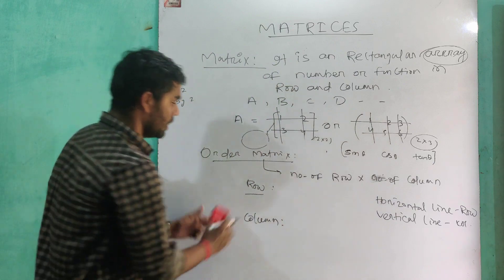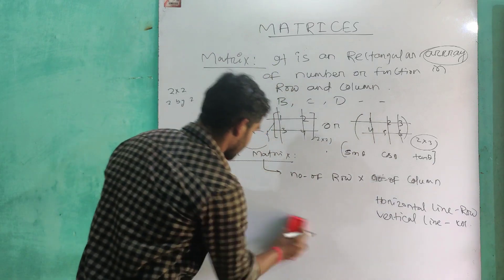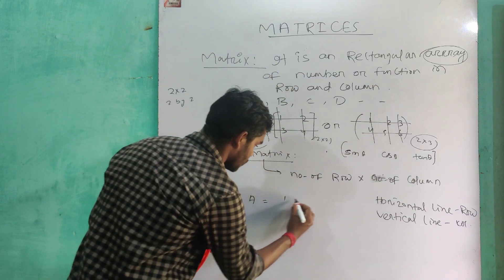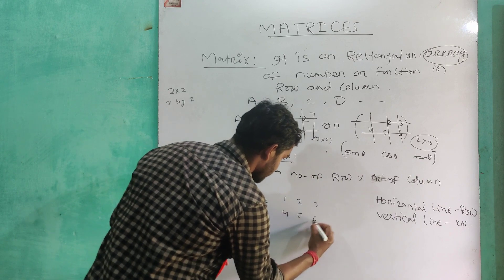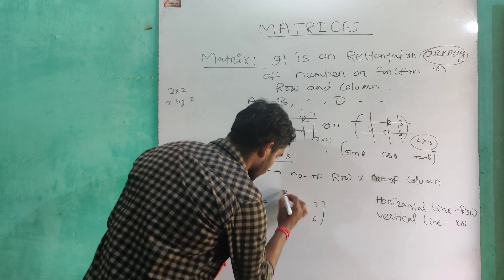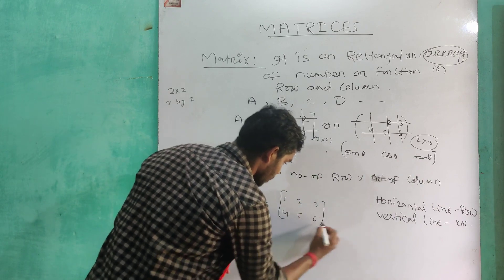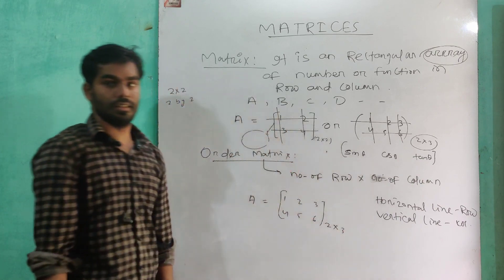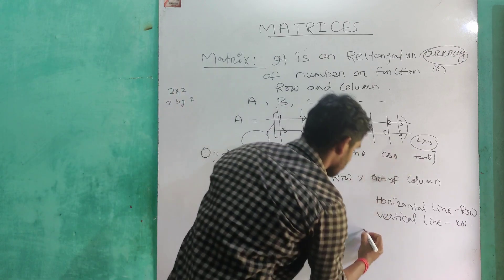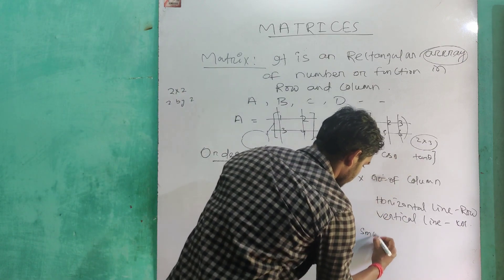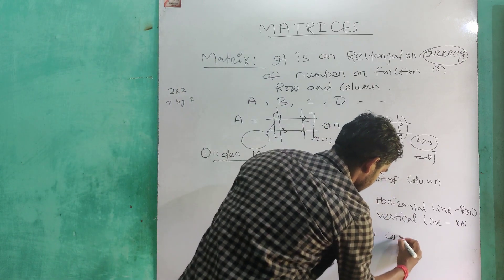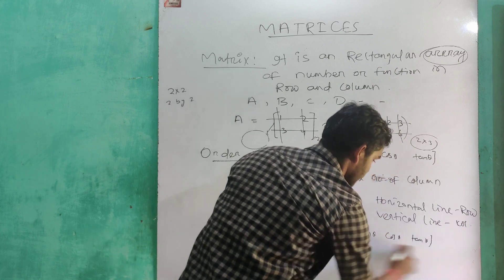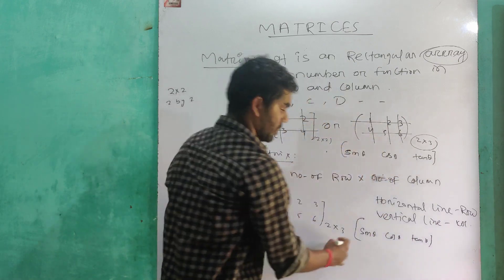We can conclude that a given matrix A equals to 1, 2, 3, 4, 5, 6 has order 2 by 3. Similarly, suppose a matrix containing sin theta, cos theta, tan theta — it has 1 row and 3 columns, so its order is 1 by 3.